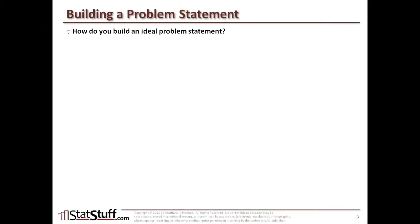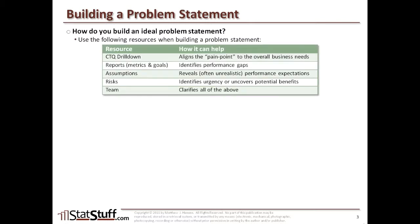Now let's talk about how you can build a problem statement and test its validity. When building a problem statement, there are a few things you can draw on. For example, you might use a CTQ drill down to help identify where in the business needs and values you see this particular symptom being felt — a great way to identify the severity of the pain. Also, existing reports that include metrics, targets, or goals help identify performance gaps — the gap between where you are and where you need to be is a clear definition of a problem.